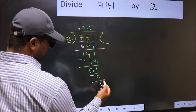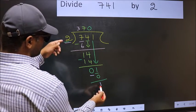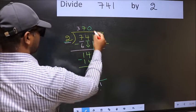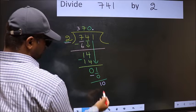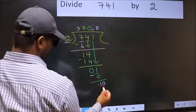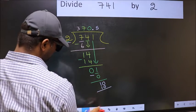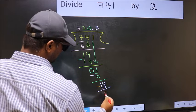Over here, we did not bring any number down. And also, 1 is smaller than 2. So now you put a dot and take 0. So 10, when do we get 10 in 2 table? 2 fives, 10. Now you subtract. 10-10, 0.